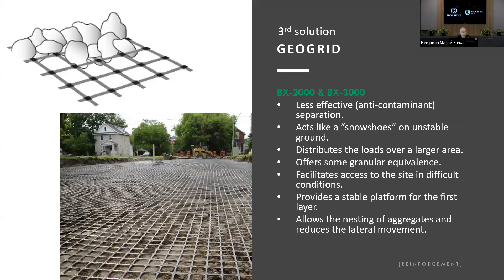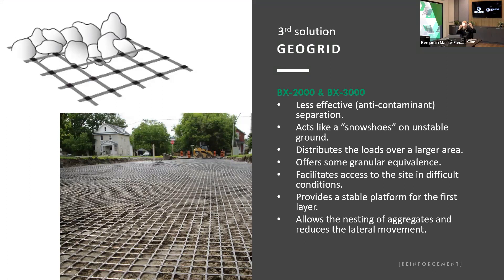The third solution is the geo grid. We have the BX2000 and BX3000 — these have square openings in their geometry. The geo grid acts like a snowshoe on unstable ground: it distributes loads over a large area so you don't sink. It facilitates access to sites with difficult conditions because it can be easily unrolled on the ground, and a bit of crushed stone on top completes the access.